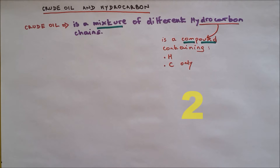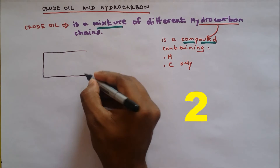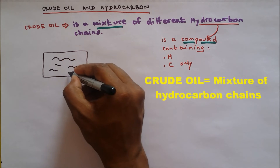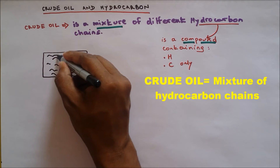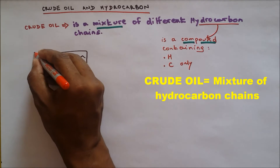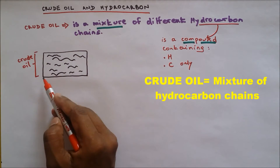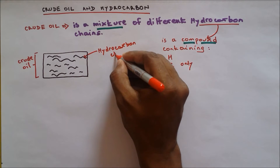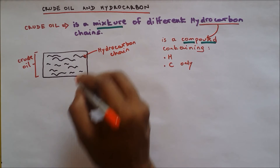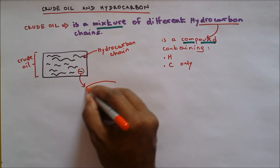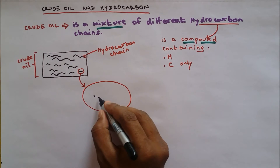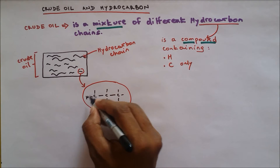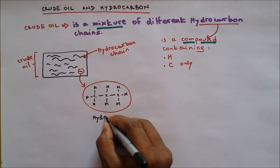Now let's do a diagram representation. If I take crude oil in this container, you'll see that you will have a mixture of different varying lengths of hydrocarbon chain. You will have long chains and short chains of different varying lengths. So this is crude oil, and this is a hydrocarbon chain. If I take a small hydrocarbon chain outside and expand it, this is called a hydrocarbon.